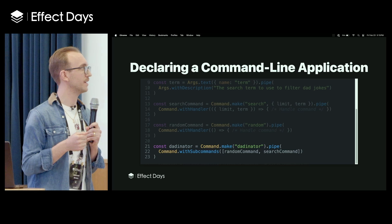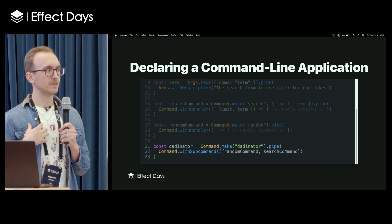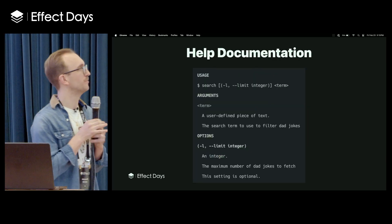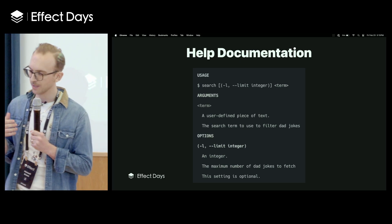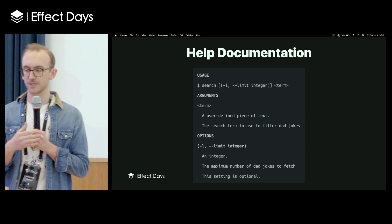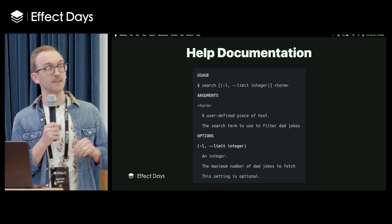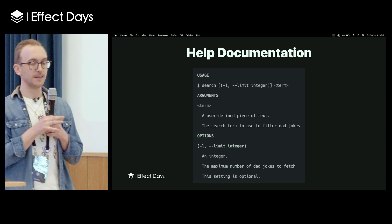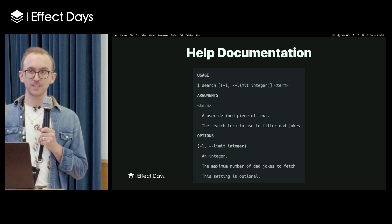Because we've specified our full CLI app in code, we can do a lot of things for the developer. One of the things I hate doing is writing documentation. Because you've specified the full structure of your CLI application in code, we can actually generate all the help documentation for the CLI for you. We can generate a full usage statement for the commands, documentation for the arguments and options you've provided, and the custom descriptions also show up in the generated documentation.